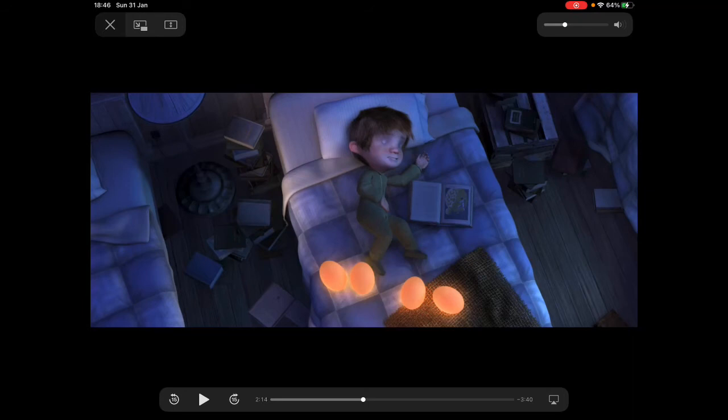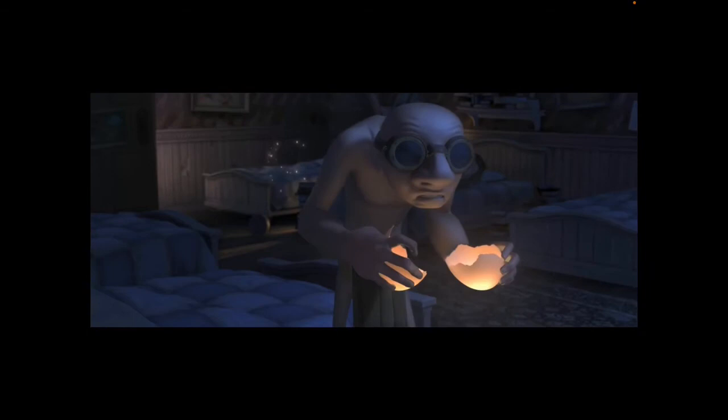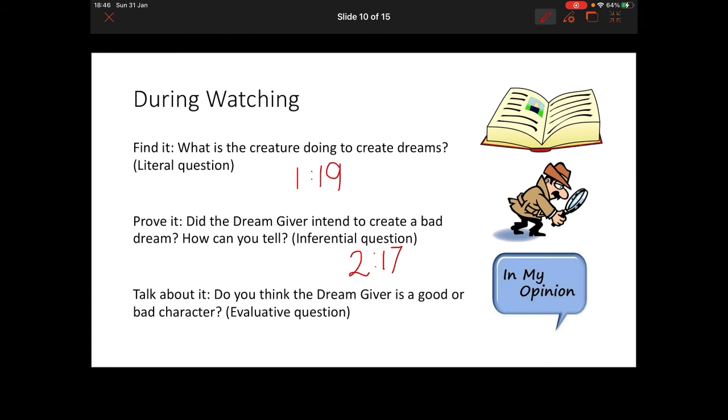So the question was, did he intend to make a bad dream and how do you know the answer? Look at his face. How did that happen? So if you could turn to somebody just now or think about it just yourself. Do you think the Dream Giver intended to create a bad dream and how can you tell? What were the clues in the text that told us?